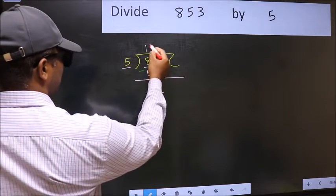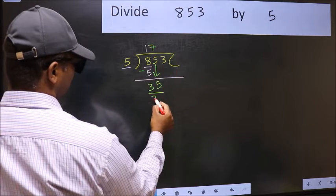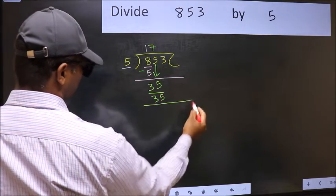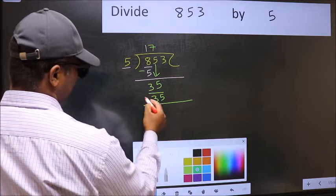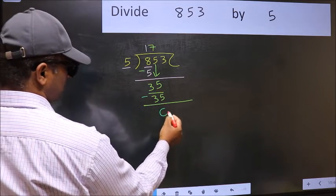When do we get 35 in 5 table? 5 times 7 is 35. Now you should subtract. 35 minus 35, 0.